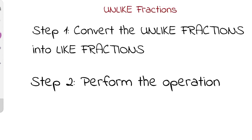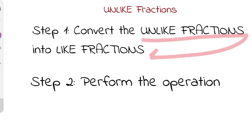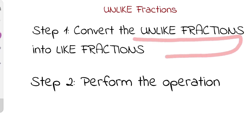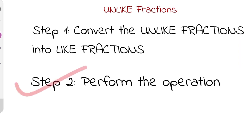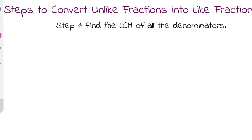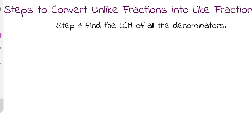For unlike fractions, step one is to convert the unlike fractions into like fractions. When they are like fractions, step two is to perform the operation in the same way we just did. Now we will see the steps to convert unlike fractions into like fractions. The first step is to find the LCM of all the denominators.